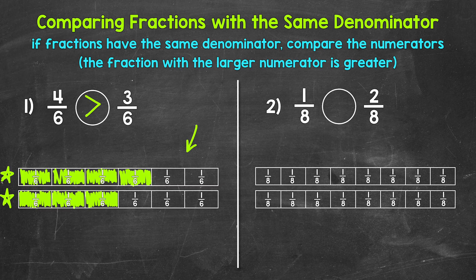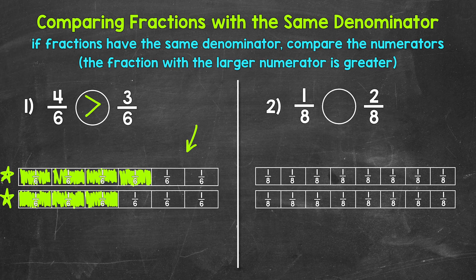Let's move on to number two, where we have one-eighth and two-eighths. So reading this from left to right, one-eighth is greater than, less than, or equal to two-eighths. Well, we have the same denominator here — eight. So let's think about this: if we have the same sized whole, the same fraction strips, divided into eight equal parts — eighths — what's greater? One out of the eight parts, or two out of the eight parts? We have the same denominator, so we can just compare the numerators. Two is greater than one, so two-eighths is greater than one-eighth.